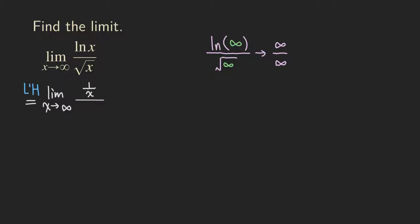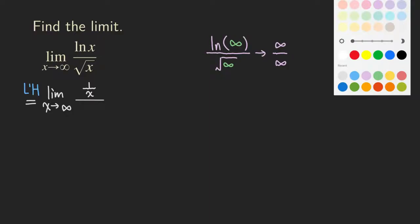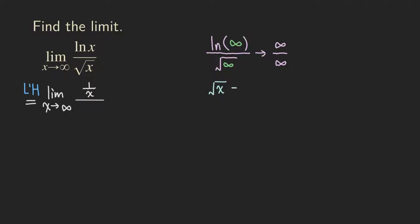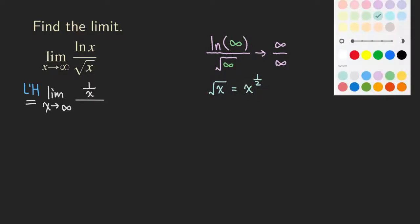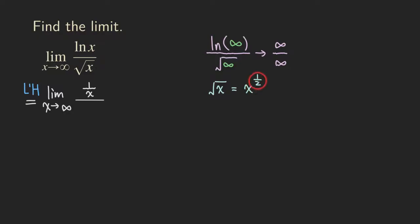For the bottom, we differentiate the square root of x. The square root of x can be written as x to the one-half. We use the power rule: bring down the one-half to the front, giving us one-half, and then the new exponent for x is one-half minus one, which is negative one-half. So the derivative of the denominator is (1/2)x^(-1/2).